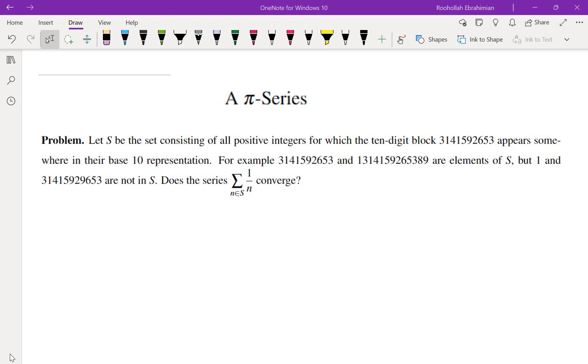So here is the problem. Let S be the set consisting of all positive integers for which the 10-digit block 3141592653, which are the first 10 digits of π, appears somewhere in their base 10 representation. For example, this 10-digit number, and if you put a 1 in front, and if you put 89 at the end, these would be two elements of S. But 1 and if you throw in an 9 in the middle, these are not in S.